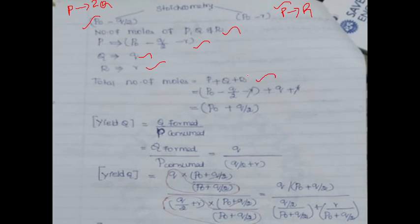Summing all components: P gives (P₀ − q/2 − r), Q gives q, R gives r. The −r and +r cancel. For Q: there is 1·q from Q component minus q/2 from P, giving +q/2. So total number of moles equals P₀ + q/2.